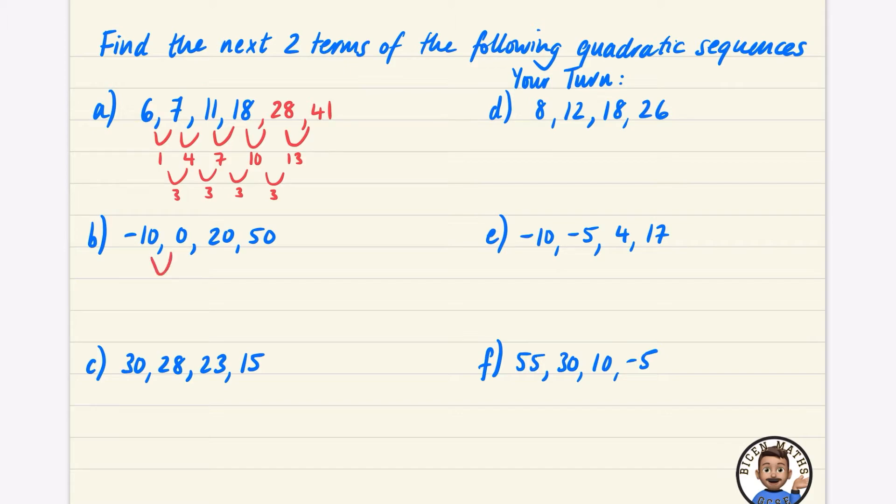Between minus 10 and 0 it's going up 10, between 0 and 20 it's going up 20, between 20 and 50 it's going up 30. So it looks like the second difference is going up by 10 each time. So it needs to go up by 40 to 90, and then it's going to need to go up 50 to 140. Yep, they're going to have a common difference consistently: 10, 20, 30, 40, 50, going up by 10 each time.